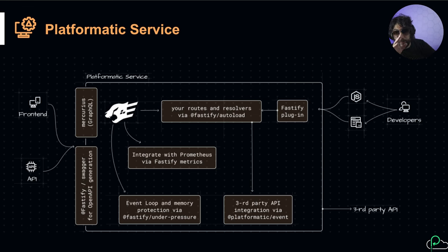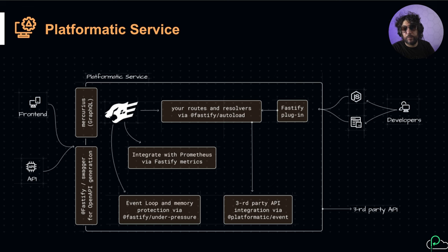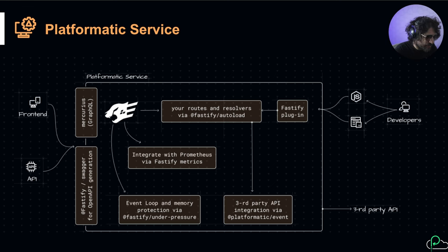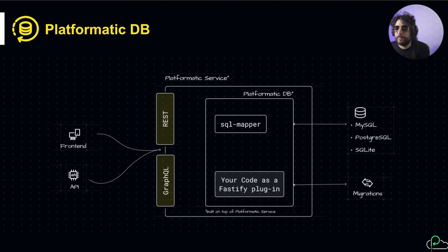Platformatic Service is essentially Fastify on steroids. It offers embedded integration for OpenAPI as well as GraphQL. It also offers integration with Prometheus, as well as event loop and memory protection with Fastify Under Pressure - which is something you should be using every day. You should be protecting your application from event loop overloading in every application, even if you're using Express. It also has the concept of Fastify autoload, which means things are automatically registered, as well as Platformatic Client.